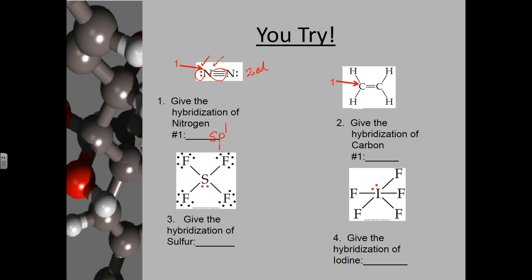For carbon number one in example two, it has a single bond, a single bond, and a double bond — one, two, three electron domains. Counting S, p1, p2 gives SP2 hybridization. So carbon number one is SP2 hybridized.